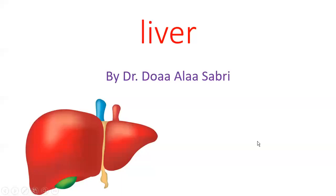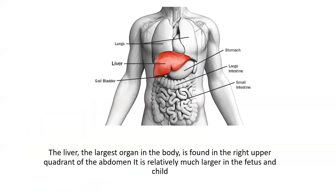Our subject today is about the liver. The liver is the largest organ in the body, found in the right upper quadrant of the abdomen. It is relatively much larger in the fetus and child.